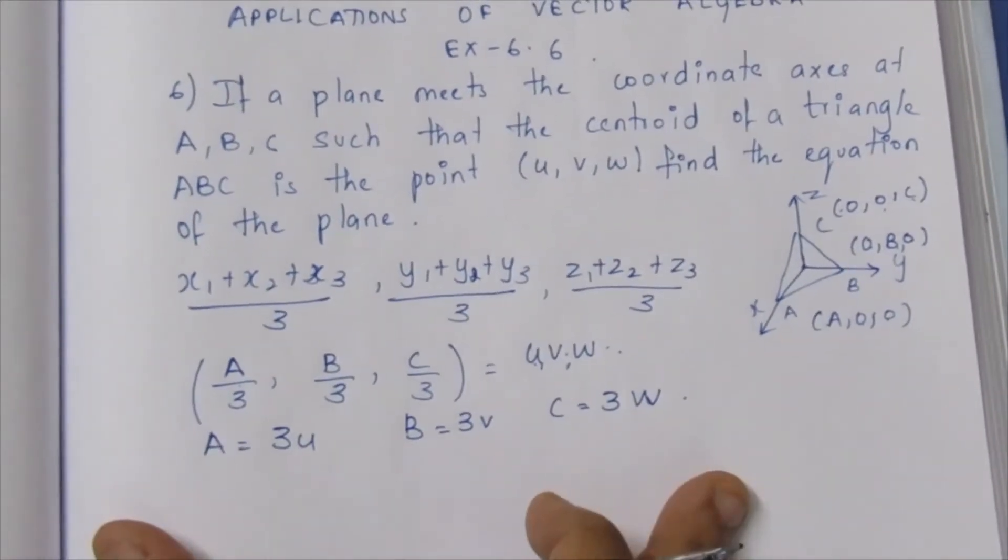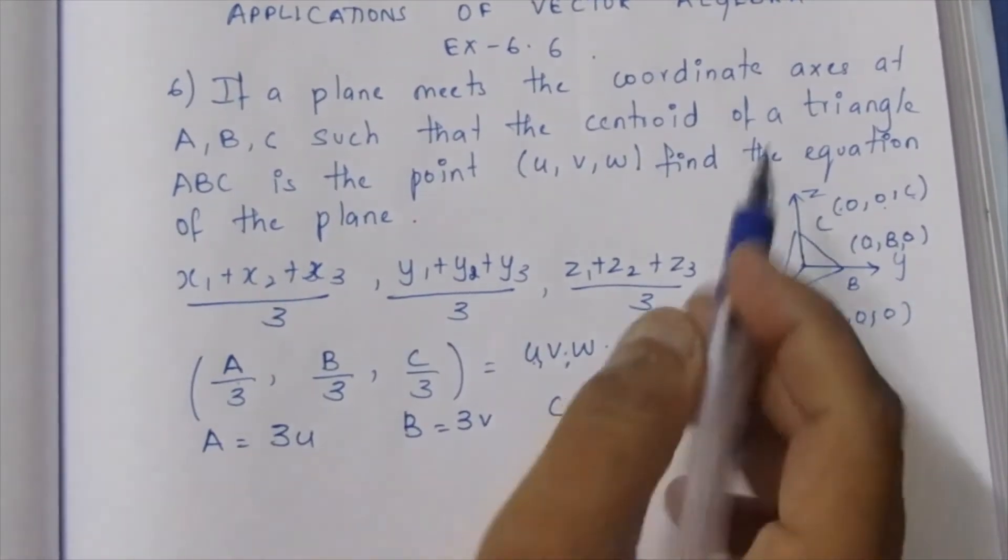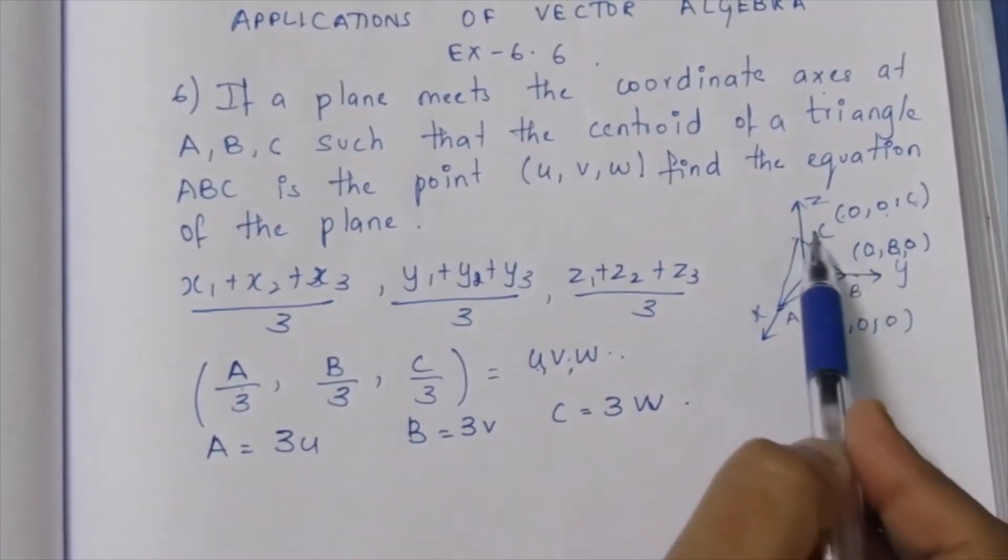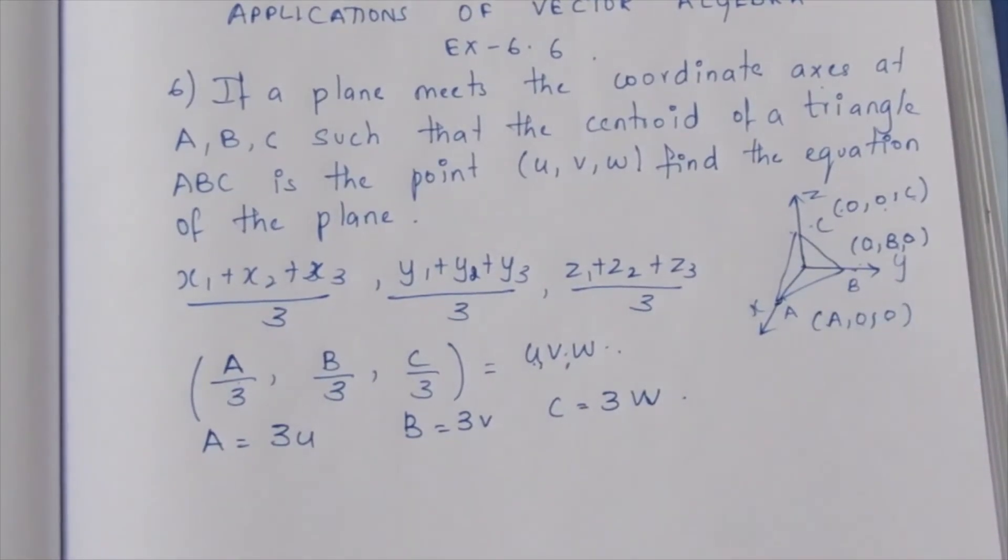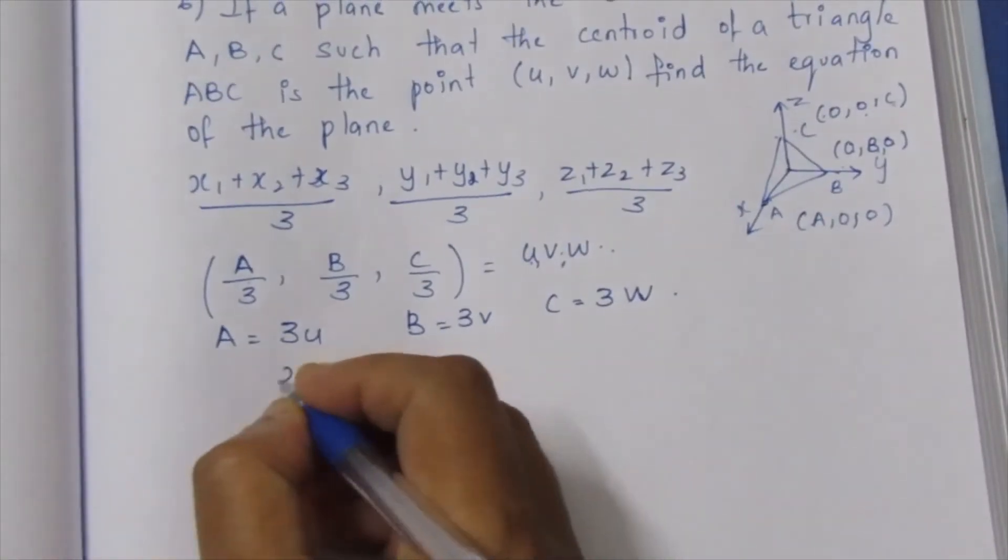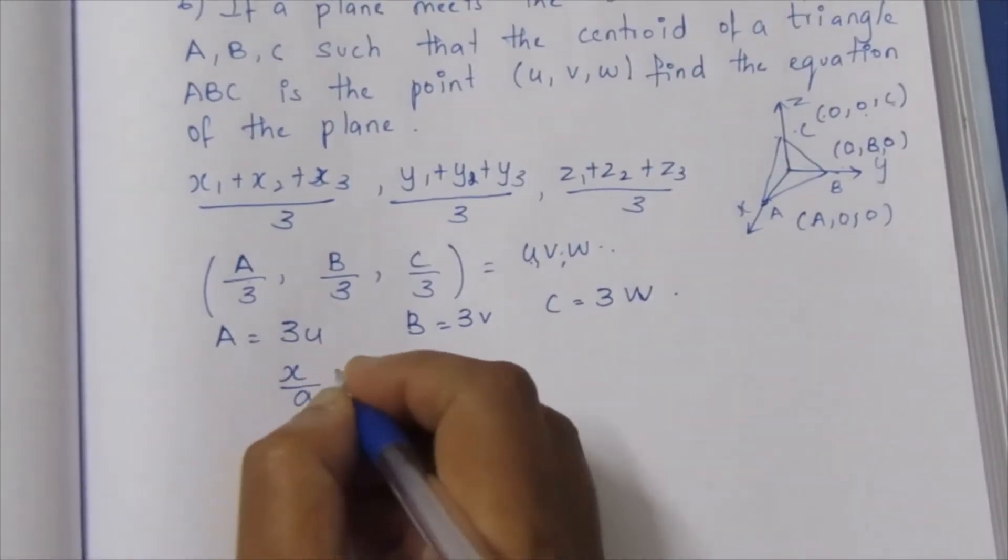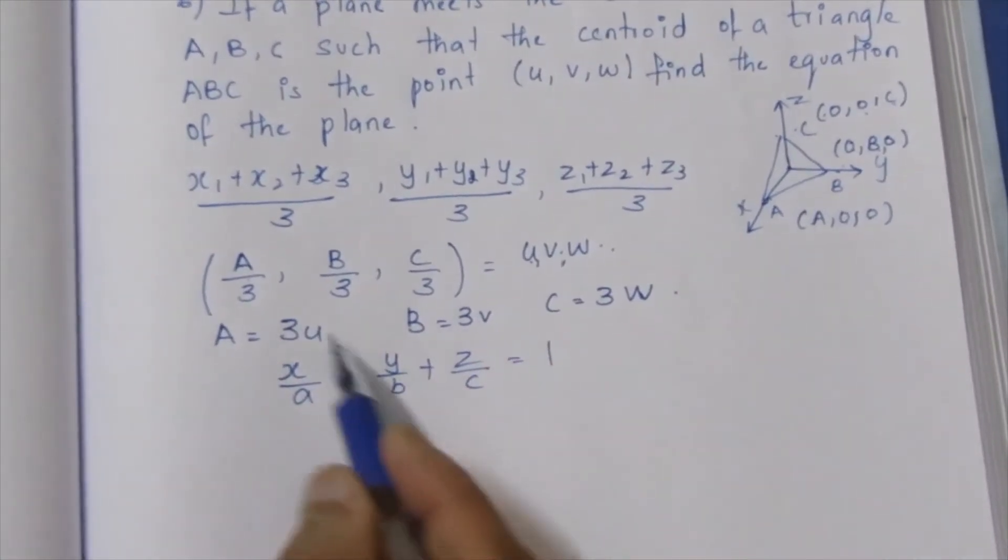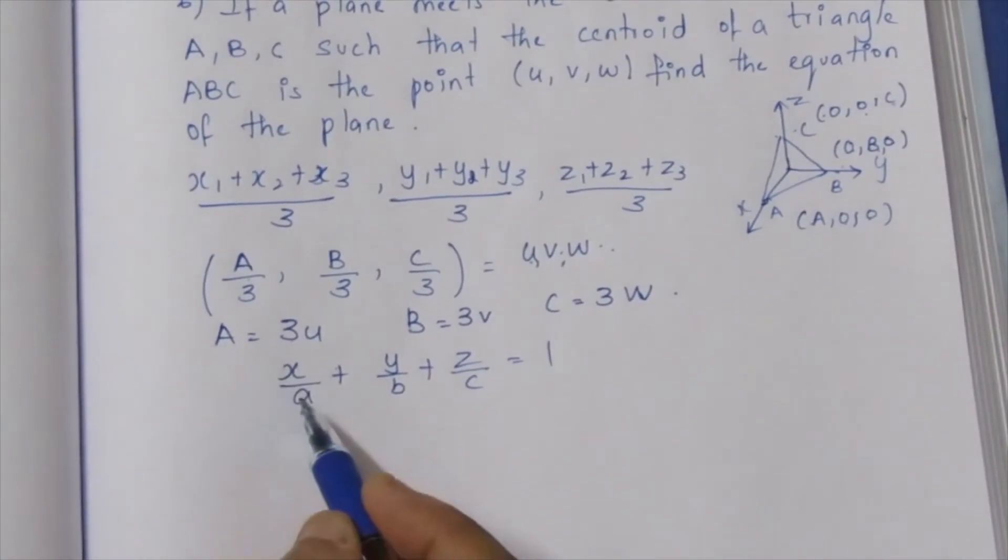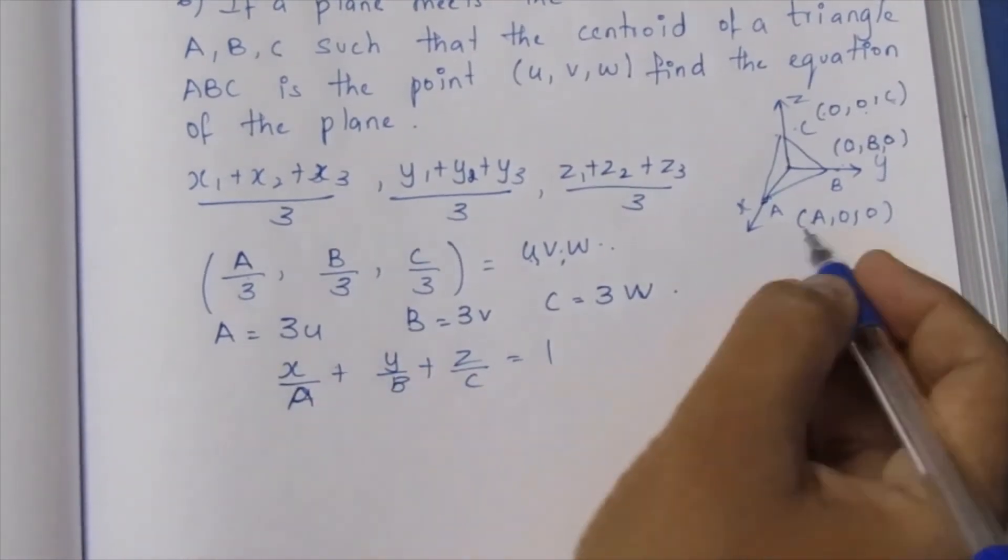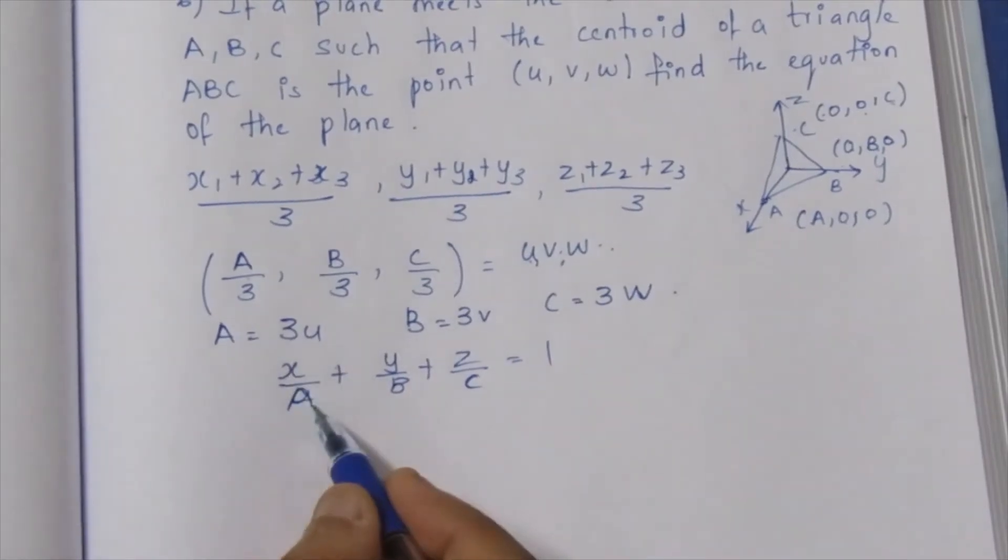Now for the plane equation. When a plane meets the coordinate axes at A, B, C, the formula is x/a + y/b + z/c = 1. We'll substitute A, B, and C.